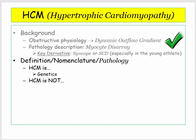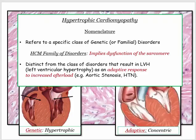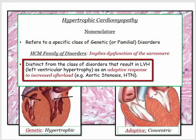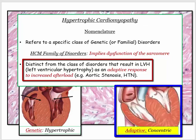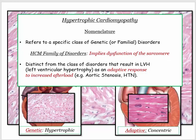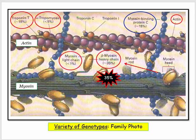Let's clarify what hypertrophic cardiomyopathy is and what it is not. Hypertrophic cardiomyopathy refers to a specific class of genetic or familial disorders characterized by sarcomere dysfunction. This is in contradistinction to those that result in LVH as an adaptive response to increased afterload — the prototypic afterload disorders being aortic stenosis or hypertension. Unlike the myocyte disarray seen in genetic hypertrophic cardiomyopathy, the patient with concentric hypertrophy has thickened but well-organized myocytes. There is no single genetic abnormality that defines hypertrophic cardiomyopathy.